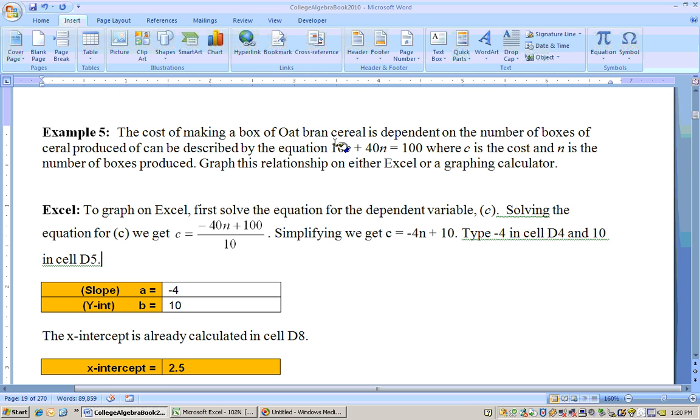To get the X intercept, put in 0 for Y. That's the C variable. And if you put in 0 for C, you would have 40N equals 100. Divide through by 40, and you would get 2.5 for the X intercept.